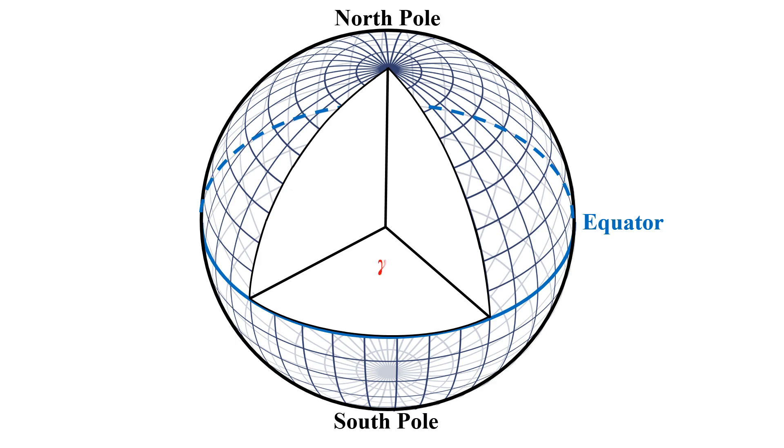Longitude, marked as gamma in this illustration, is the angle from the prime meridian, which runs through the Royal Observatory in Greenwich, England. Longitude is the angular measure on the terrestrial sphere 180 degrees west or east of the prime meridian.